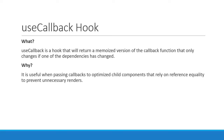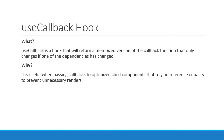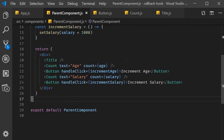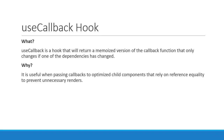Let's break this down. The first part is that it is useful when passing callbacks — that is, functions like incrementAge and incrementSalary. The second part says 'to optimized child components', so we have three child components which have been optimized with React.memo to prevent unnecessary renders. Reference equality is checking if the functions are equal, which is required for our example. If all the conditions are met, we should be using useCallback to optimize further.